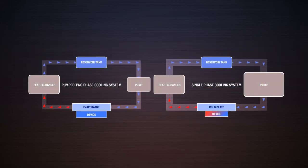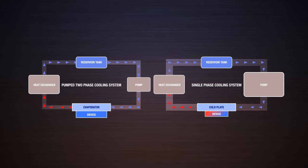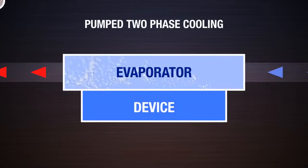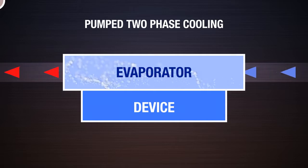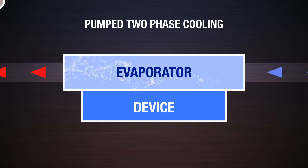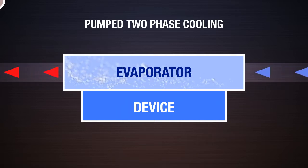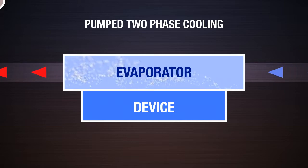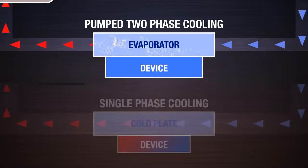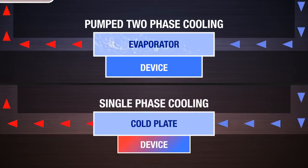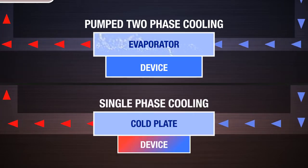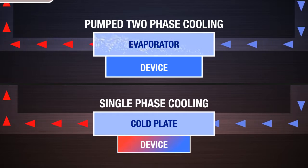Pumped two-phase or evaporative cooling systems use the same basic system-level components as the pumped single-phase system. However, pumped two-phase systems typically use refrigerants as the working fluid. Through refrigerant selection and appropriate controls, the refrigerant is designed to boil as it acquires heat from the hot surface of the device. More heat can be removed through the boiling process, otherwise known as latent heat, than through sensible heat with single-phase cooling.